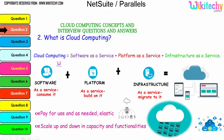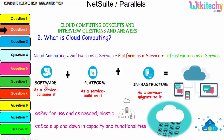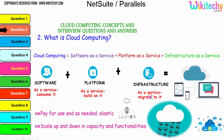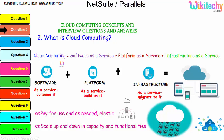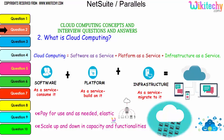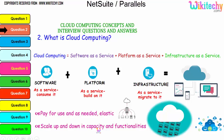Cloud computing is nothing but Software as a Service, where software is consumed as a service, Platform as a Service where the platform is considered a service, and Infrastructure as a Service. The collaboration of software, platform, and infrastructure is referred to as cloud computing. The major advantages are pay-for-use as needed and elasticity — if you need minimal storage, pay for that; if you need bigger storage, pay for that. You can also scale up and down capacity and functionalities.